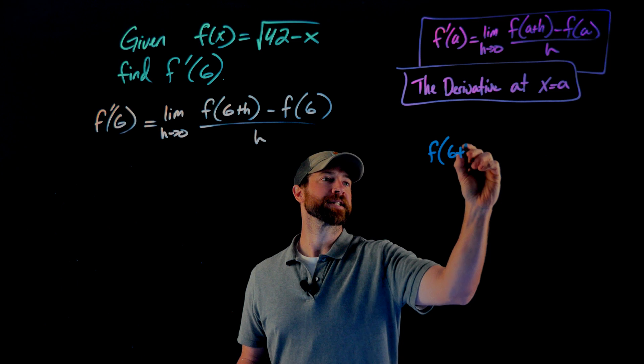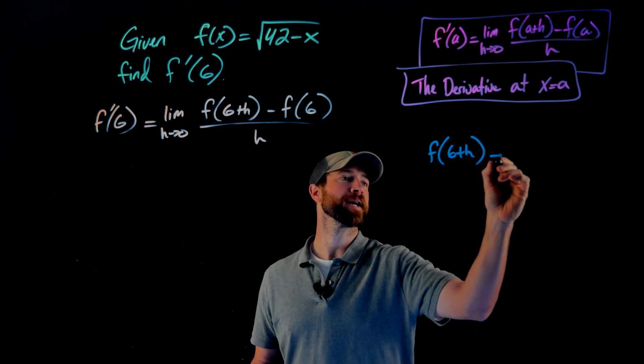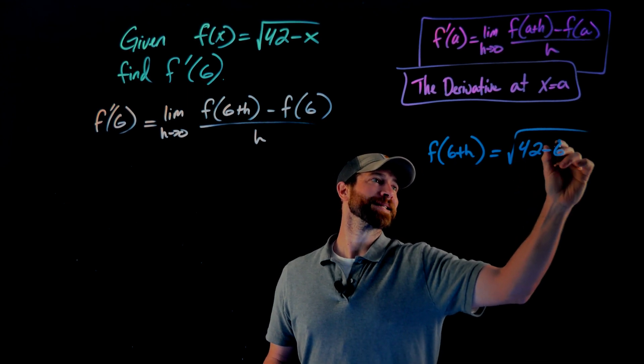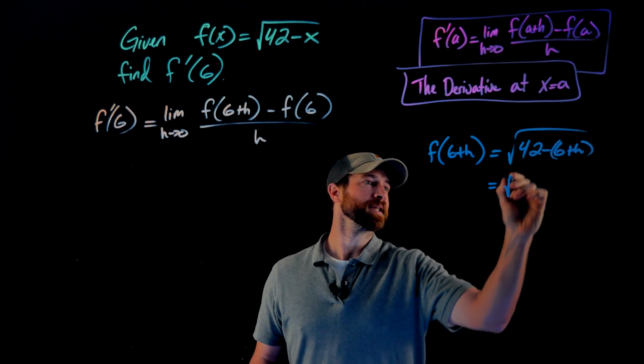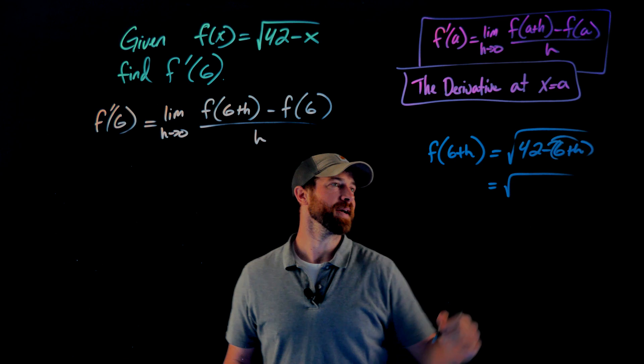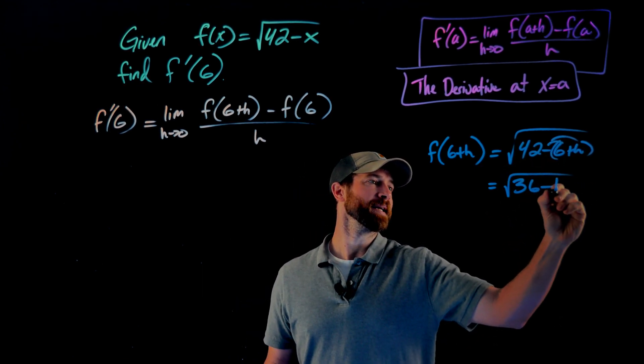So f of six plus h is simply plugging in six plus h for x into this expression. So that would give me 42 minus six plus h. Just clean this up a little bit, distributing that negative through. So I get a negative six and a negative h. 42 minus six would be 36 minus h.